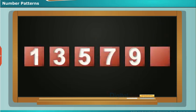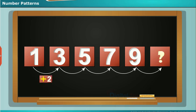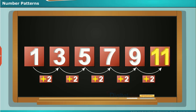Here is the number pattern. Look at the sequence of numbers. Can you guess the next number in this number pattern? Start at one and add two each time. One plus two equals three, three plus two equals five, five plus two equals seven, seven plus two equals nine. Keep adding two each time. The next number will be nine plus two, which equals eleven.